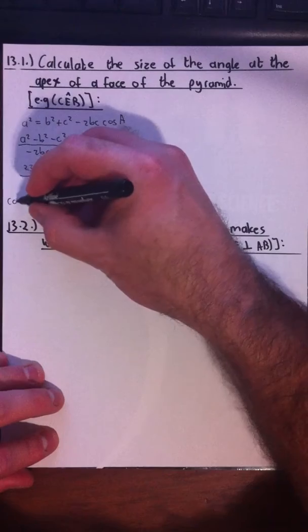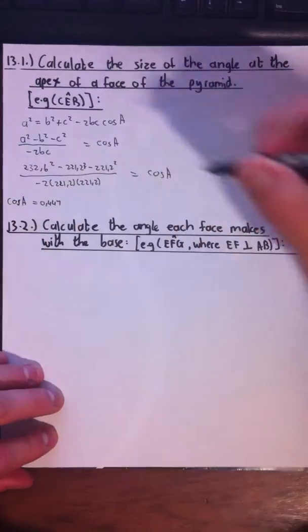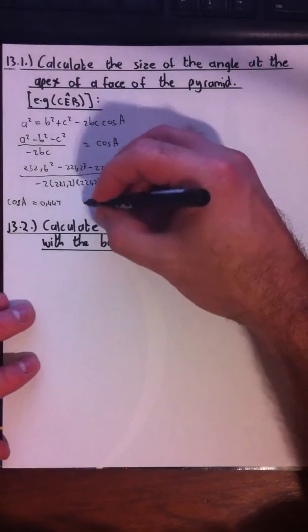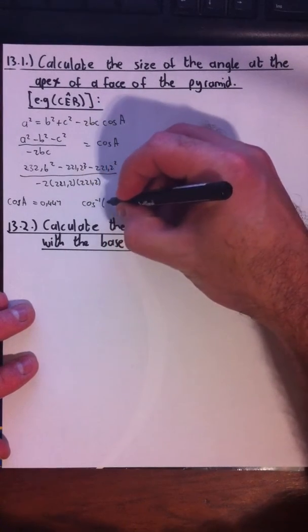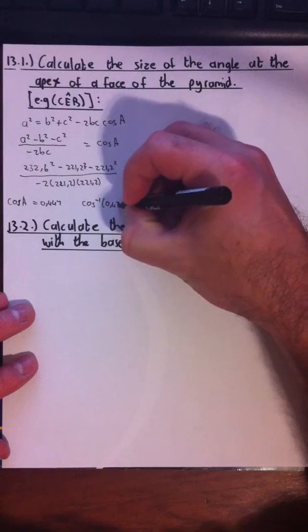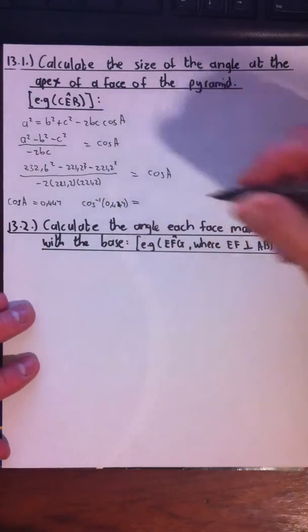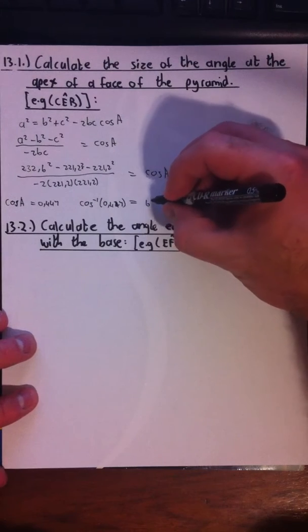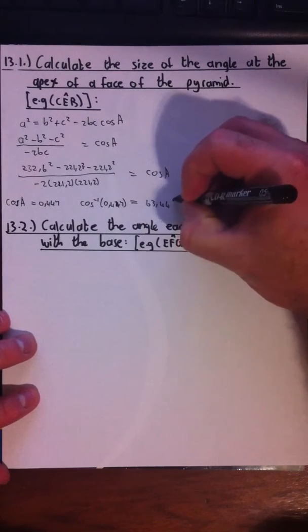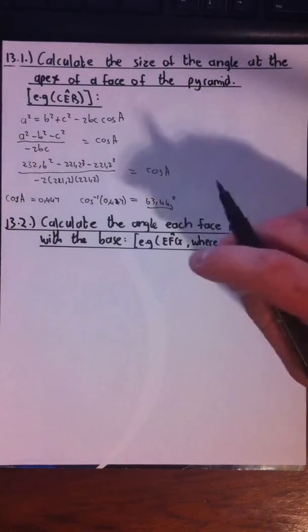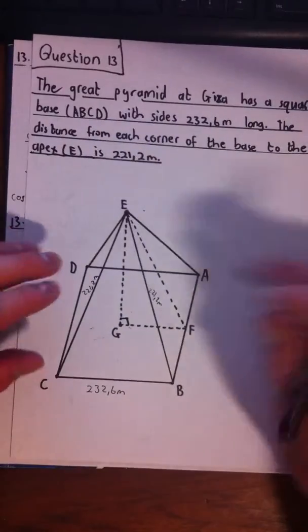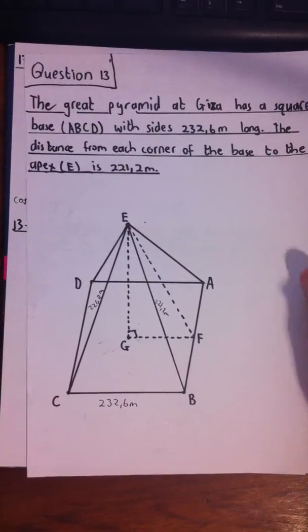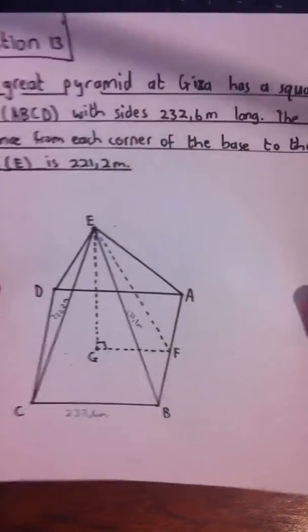0.447 equals cosine of angle E. So now we need to find what angle E is: arc cosine of 0.447, and our calculator tells us that is equal to approximately 63.44 degrees. You could also have constructed two right-angled triangles and used trigonometric ratios to find it that way, just using one or two extra steps.